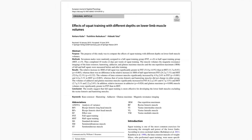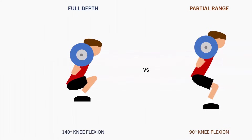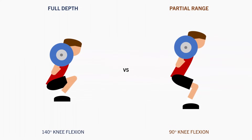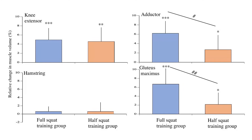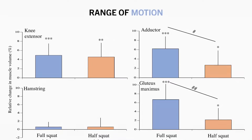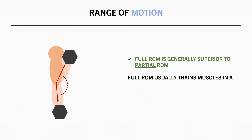It was found that full depth squats resulted in greater overall increases in muscle volume compared with partial depth squats. So if increasing range of motion takes the muscle into a more lengthened position, it will likely be beneficial for hypertrophy.